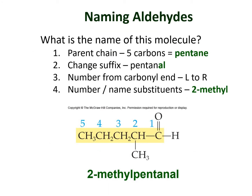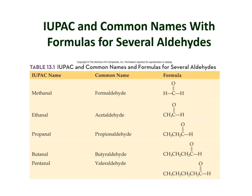In a naming example, we find the longest carbon chain containing the aldehyde group — located on the right side. Starting numbering from the carbonyl carbon, the total chain has five carbons, making it a pentanal. Checking for branches, a methyl group is found at carbon number two, so the full name is 2-methylpentanal.